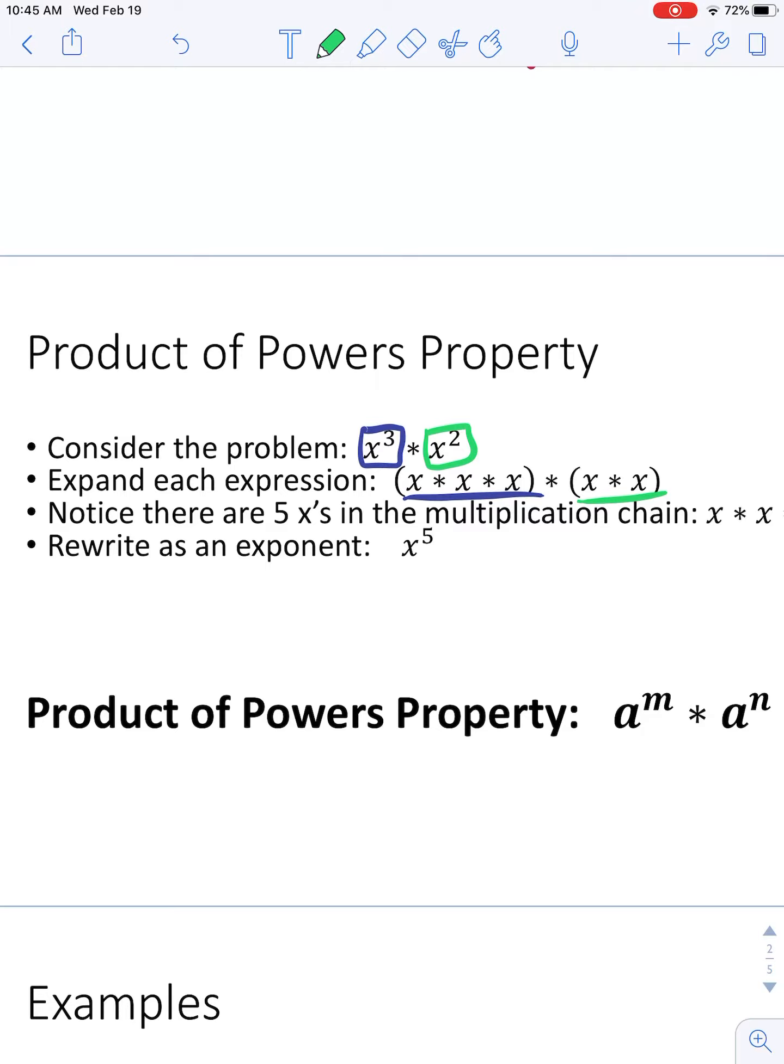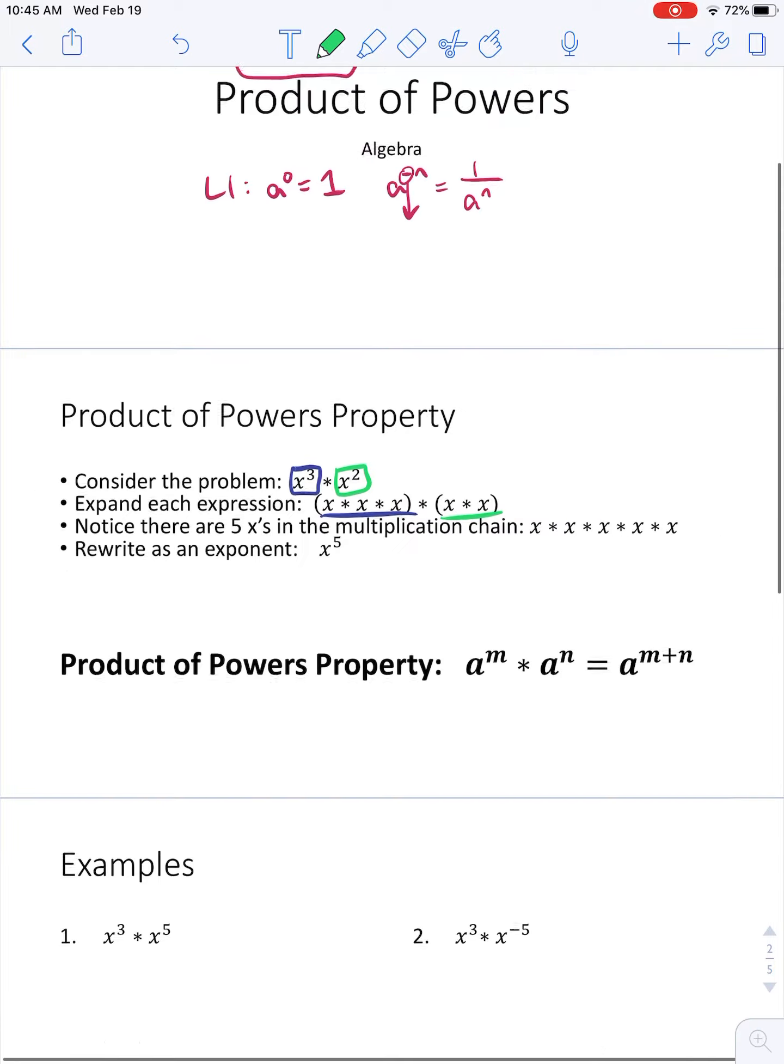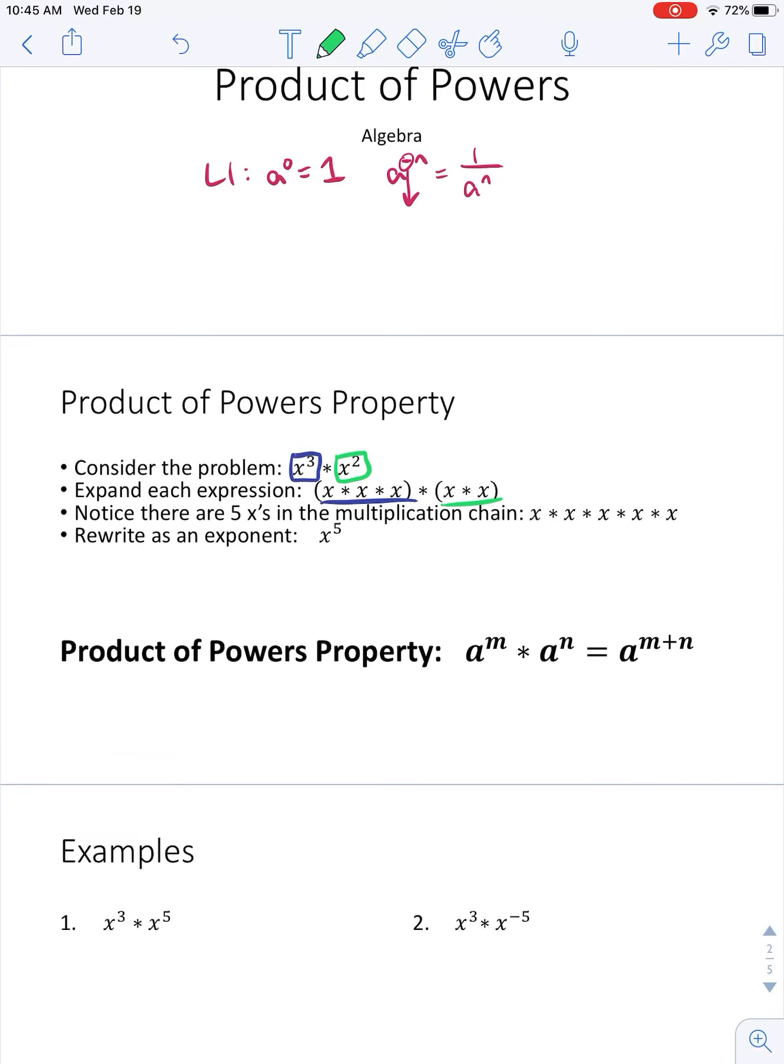So together, if I have 3 x's and I have 2 x's, I really have 5 x's, which we could write as an exponent as x to the 5th.